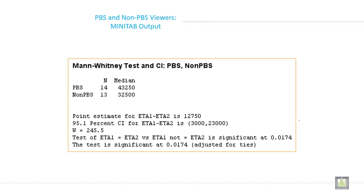This is the MINITAB output where PBS viewers is 14, non-PBS viewers is 13, and the median of PBS viewers is this, and the median of non-PBS viewers is 32,500.